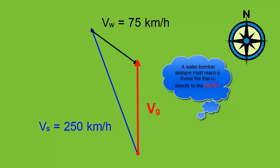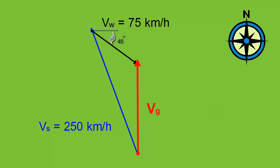First of all, the water bomber must reach the forest fire that is directly to the north. Now the wind is from the northwest or towards the southeast, which automatically implies a 45 degree angle. But we need to know what the angles are inside the triangle that we've drawn by our vectors.